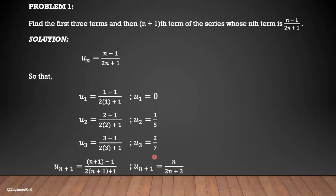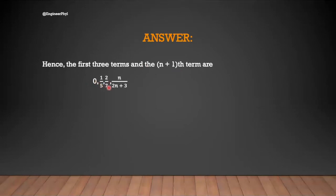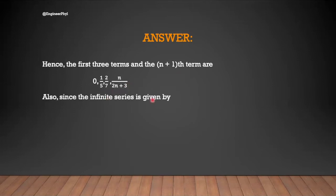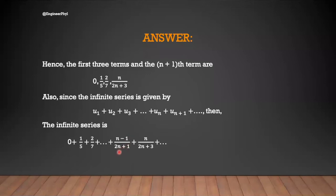For the (n+1)th term, replacing n by n+1, we have (n+1−1) / (2(n+1)+1) = n/(2n+3). So the first three terms and the (n+1)th term are 0, 1/5, 2/7, and n/(2n+3). If asked to express in infinite series form: 0 + 1/5 + 2/7 + … with nth term (n−1)/(2n+1) and (n+1)th term n/(2n+3).